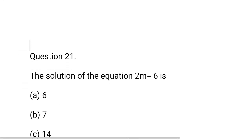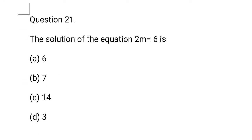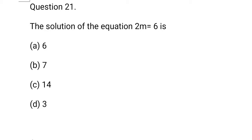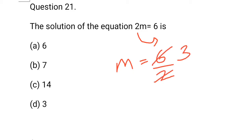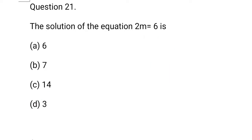Question 21: The solution of the equation 2m is equal to 6. So, 2m equals 6, and m is equal to 6 divided by 2, that is equal to 3. m is equal to 3 is the answer, d option is correct.